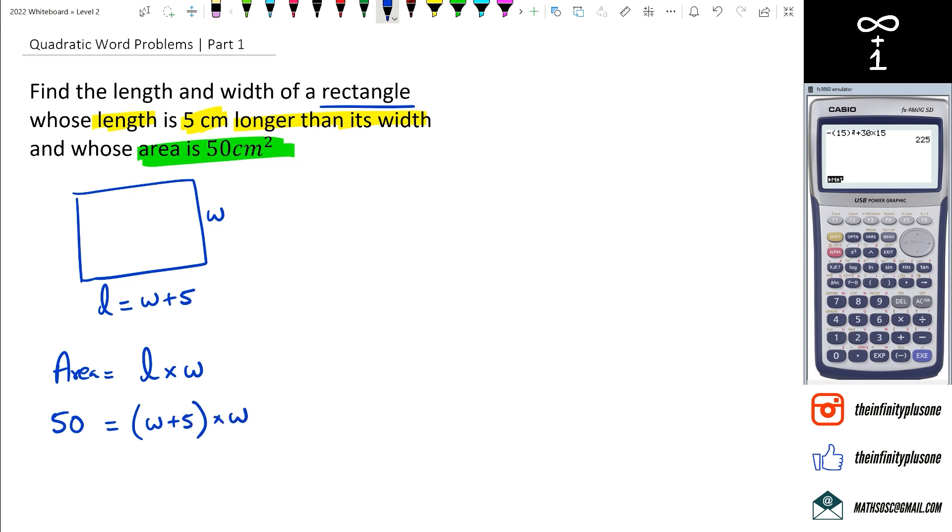At this point we need to expand the brackets, but what I'm going to do is I'm just going to rewrite this as w in front and w plus 5. So at this point what I need to do is w times w and w times 5, which I'm going to carry on here.